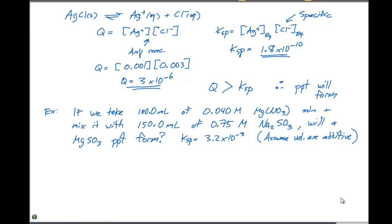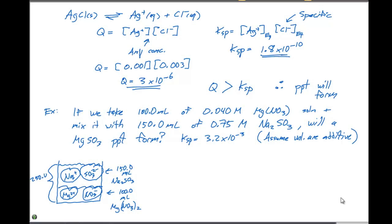So what this means is I have a beaker over here. The first thing I'm going to do is add 100.0 milliliters of our Mg(NO3)2 solution. So over here I have Mg2+ cations and I have nitrate anions. Then I'm going to add 150 milliliters of our sodium sulfite. So that means now I also have sodium plus ions in solution and I have SO3 2- ions also in solution.